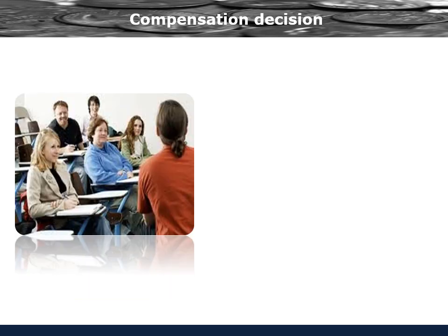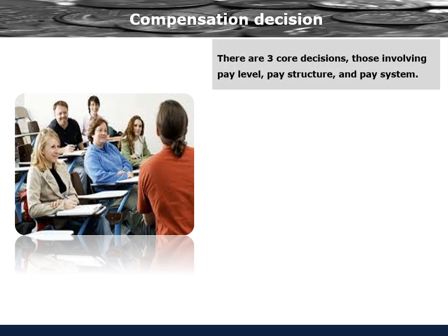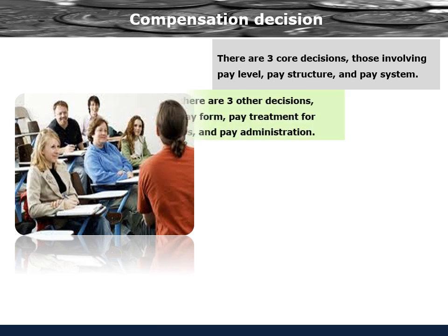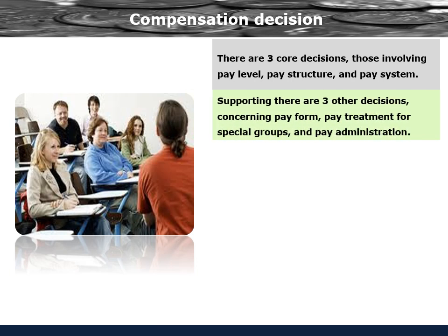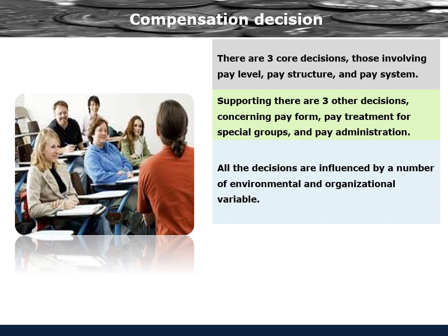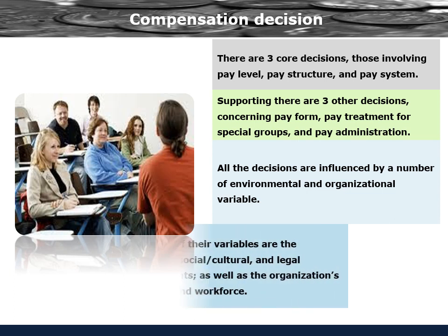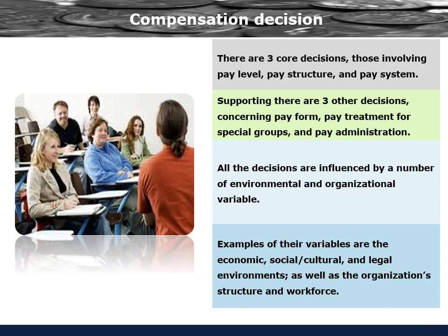Let us understand compensation decisions. There are three core decisions: those involving pay level, pay structure, and pay system. Supporting these, there are three other decisions concerning pay form, pay treatment for special groups, and pay administration. All the decisions are influenced by a number of environmental and organizational variables. Examples of these variables are the economic, social or cultural, and legal environments, as well as the organization's structure and workforce.